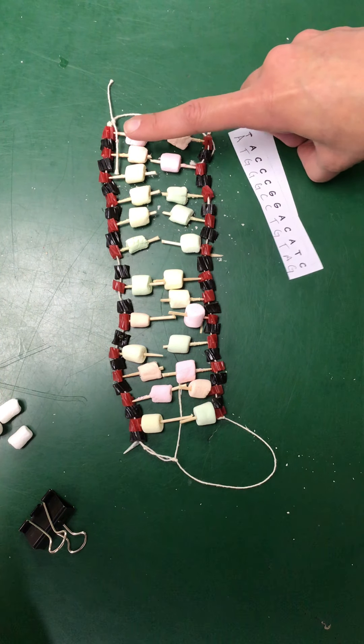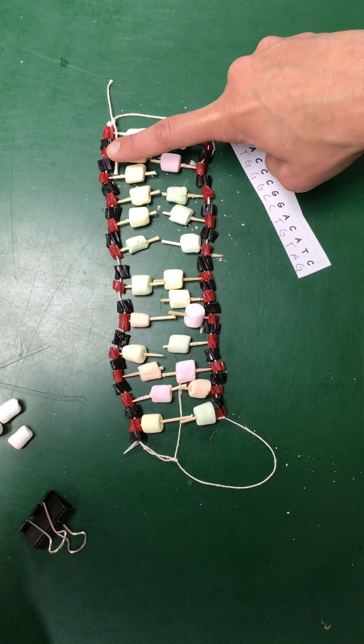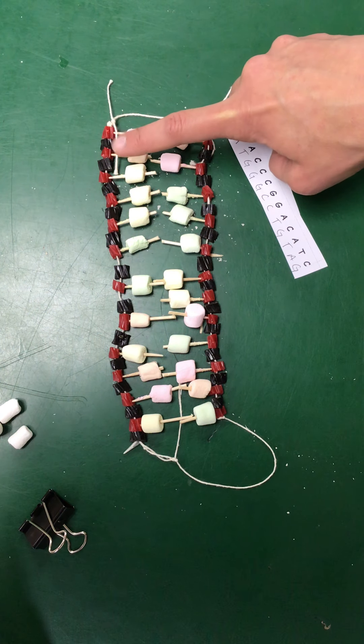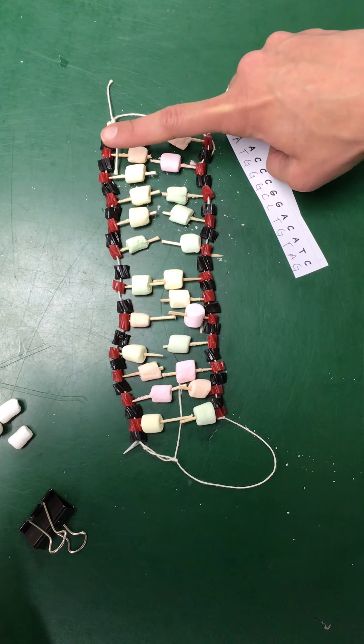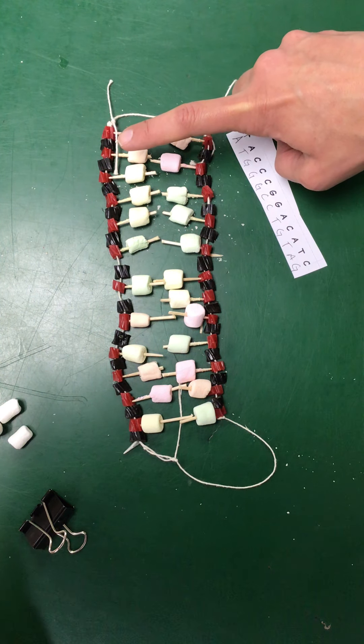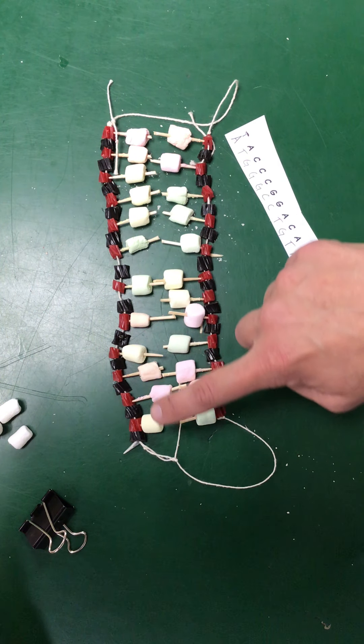So a nucleotide on here we can see is that phosphate, the black licorice, to the sugar, the red licorice, to then the marshmallows with the toothpicks, which are nitrogen bases, one nucleotide right there. And then we know that those nitrogen bases are connected by a hydrogen bond.